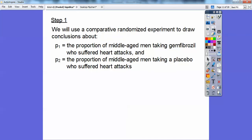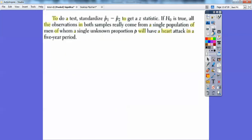Step one, we'll use the comparative randomized experiment to draw conclusions. The population 1 is the proportion of men that are taking the drug who suffered from heart attacks. And the population 2 is the men who took the placebo and also suffered heart attacks. So we will hope to show that the drug will reduce heart attacks. Remember, our null hypothesis is there's no change. And since we want it to reduce, then the people who took the drug is going to be less heart attacks than the people who didn't. So this is our alternative hypothesis.